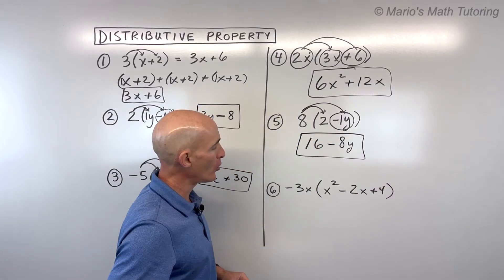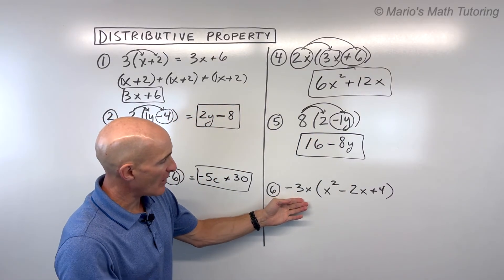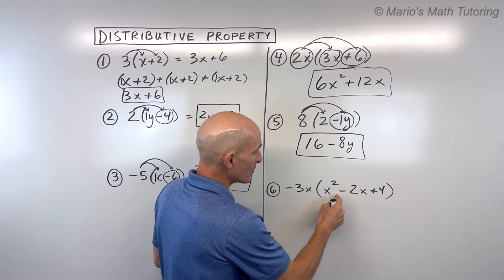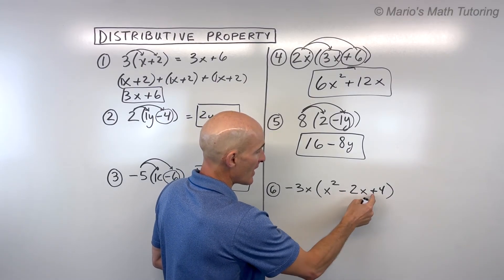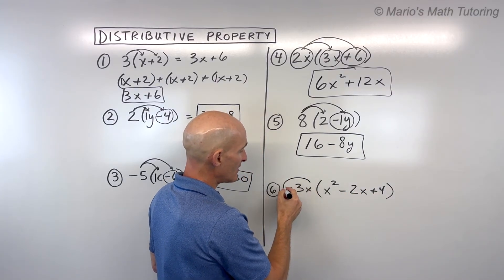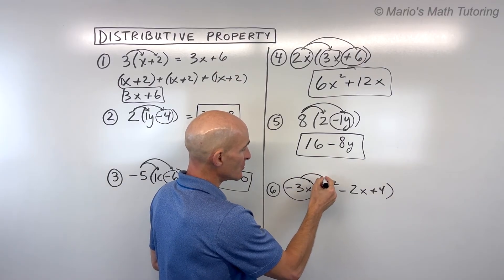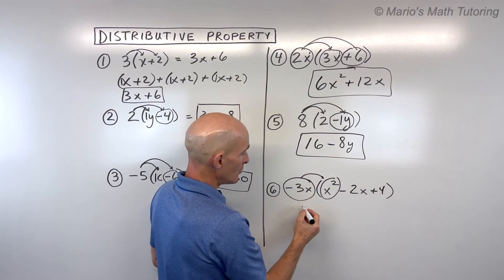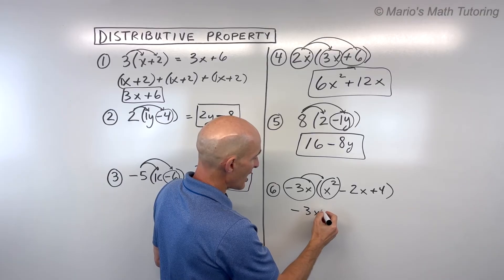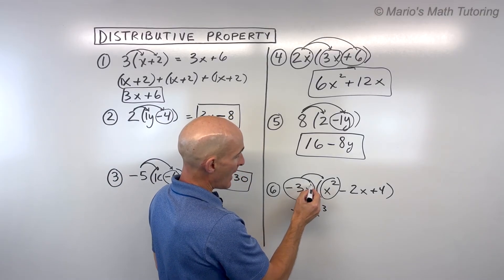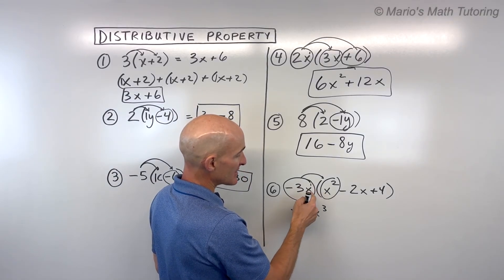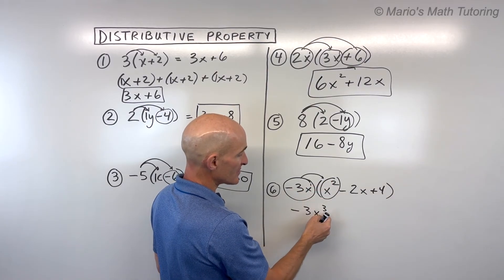Okay, last example. See if you can do this one on your own. If I was doing this now, we have a trinomial. See, three terms. They're separated by the plus or minus. So three groups. We're taking the negative 3x, distributing to x², which gives us negative 3x³. Remember, I'm adding the exponents if I have the same base and I'm multiplying. So 1 plus 2 gives us 3.